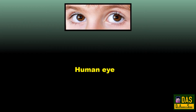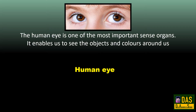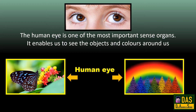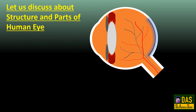Human eye. The human eye is one of the most important sense organs. It enables us to see the objects and colors around us. Let us discuss the structure and parts of the human eye.